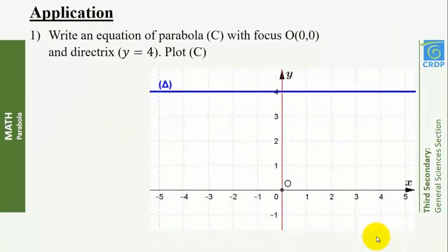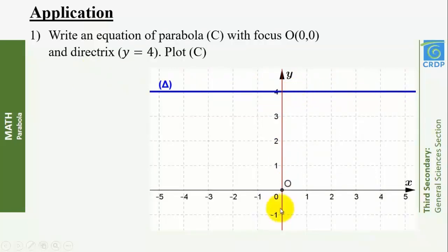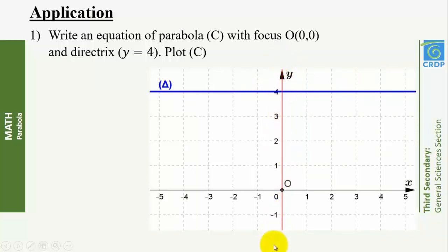Now let's move to practice. Write an equation of parabola C with focus O(0, 0) and directrix Y = 4, then plot C. Since the focal axis passes through focus O(0, 0) and is perpendicular to directrix delta, then Y'OY is the focal axis. The vertex V is halfway between O and delta, so the coordinates of V are (0, 2).